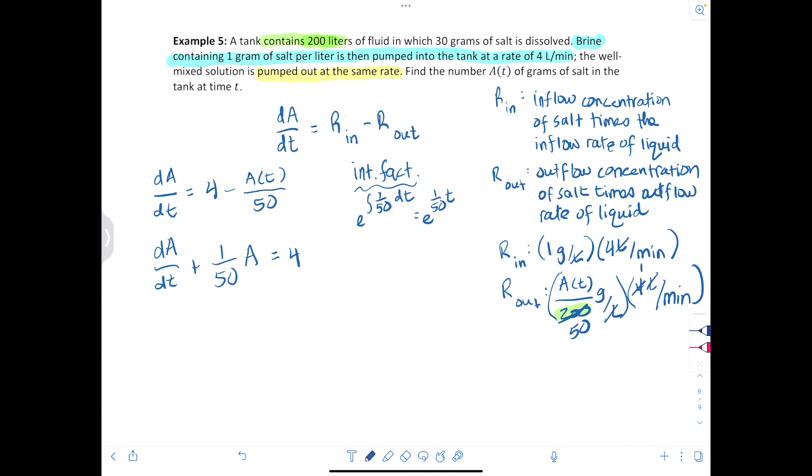Okay, so now multiplying through by our integrating factor on both sides, we will have d/dt of e to the t/50 times A is equal to 4e to the t/50.